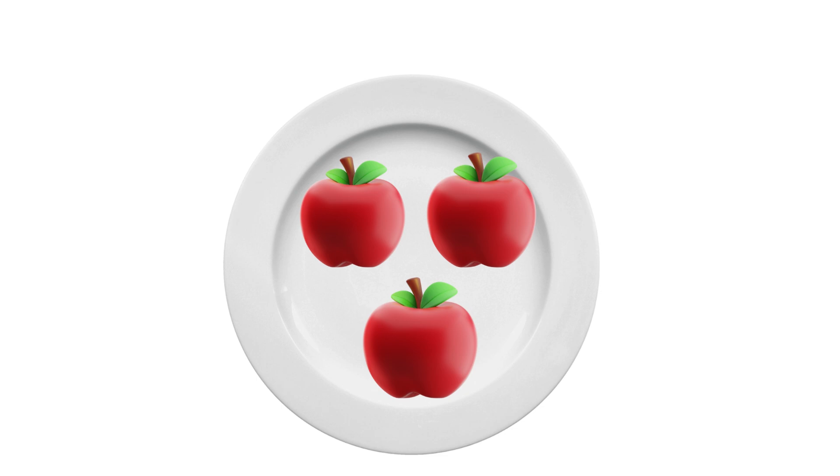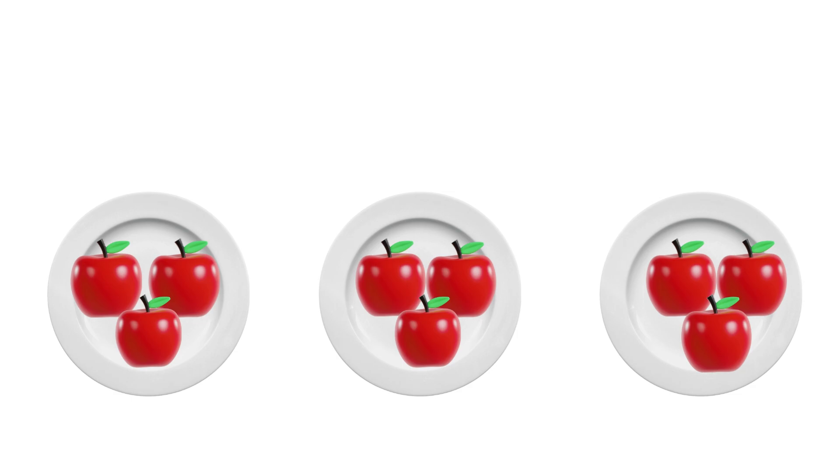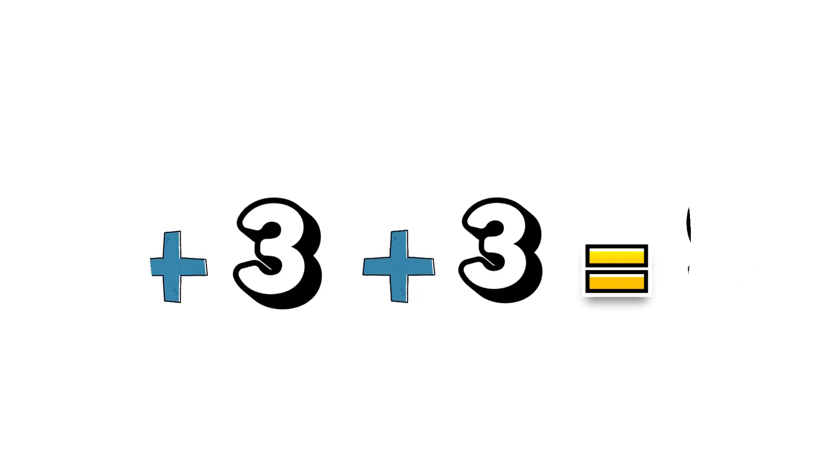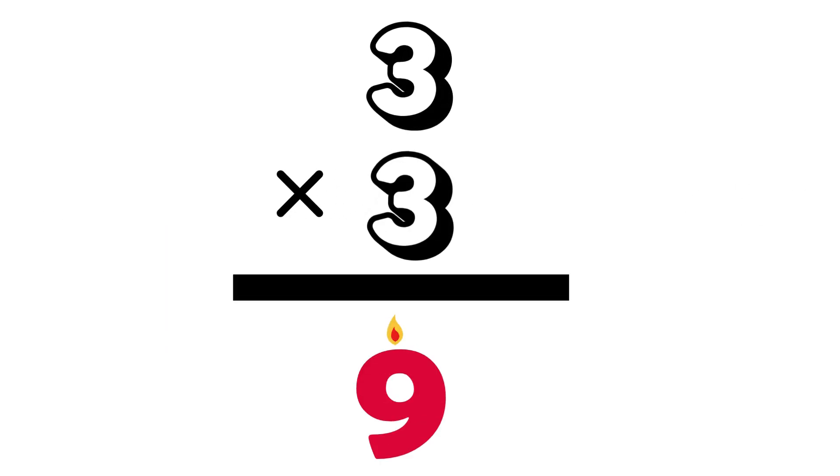Let's say you have three apples on one plate. Now what if you had three plates? That's three apples, three times! We can say it several ways, such as three plus three plus three equals nine, or three times three equals nine.